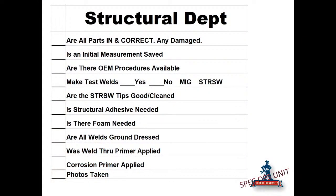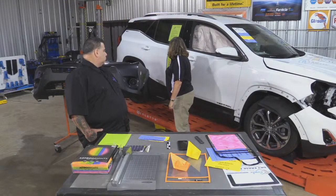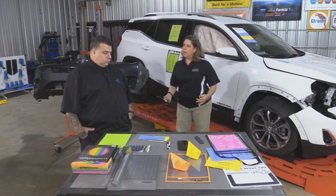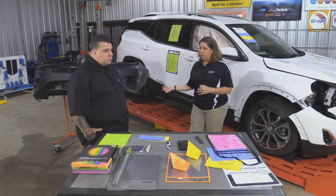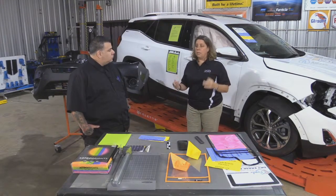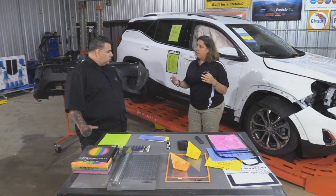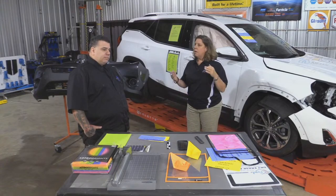The technician next to you can't sign off — it needs to be somebody not in that department. You may bring the estimator back out, or a shop foreman if you have one. The shop foreman is going to go through the structural department checklist and come out and look. If they can't find the test welds, the repair stops. If the welds aren't dressed or aren't proper, the repair stops. If I don't have the secondary measurement and then the final measurement showing the structure has been corrected, the repair stops. If corrosion protection primer is not there, the repair stops.